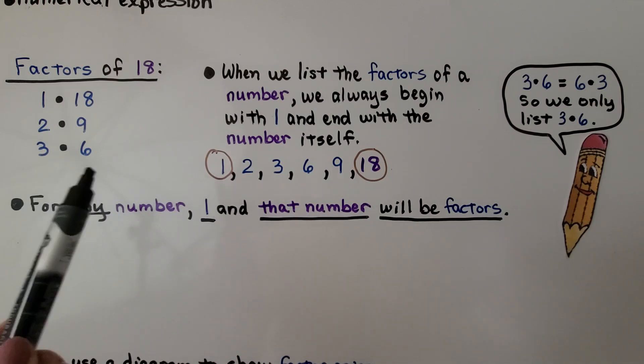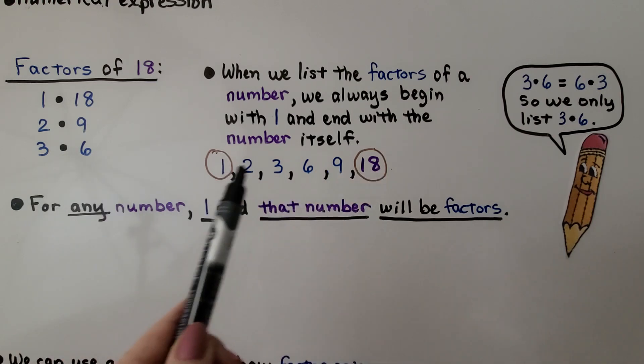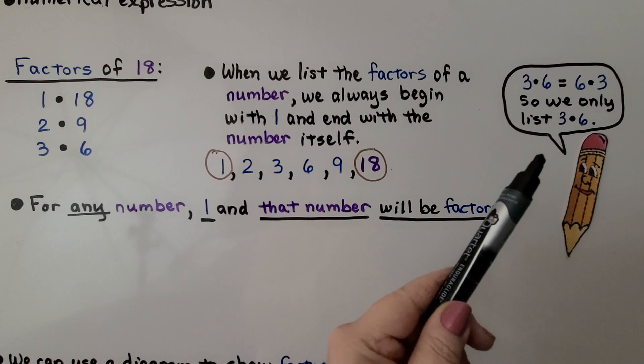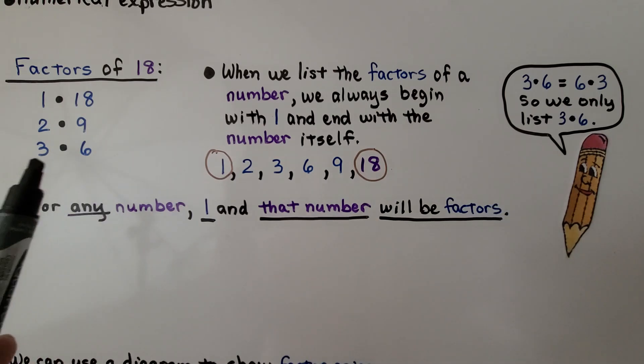And again, we're not going to say 6 and 3, 9 and 2, 18 and 1 because then we're just going to be repeating these numbers. 3 times 6 is the same thing as 6 times 3. So we only list 3 and 6 one time, once.